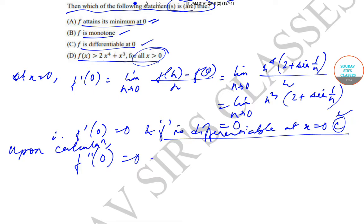So that implies that f(x) does not have minimum at x equal to 0. So option A is wrong.